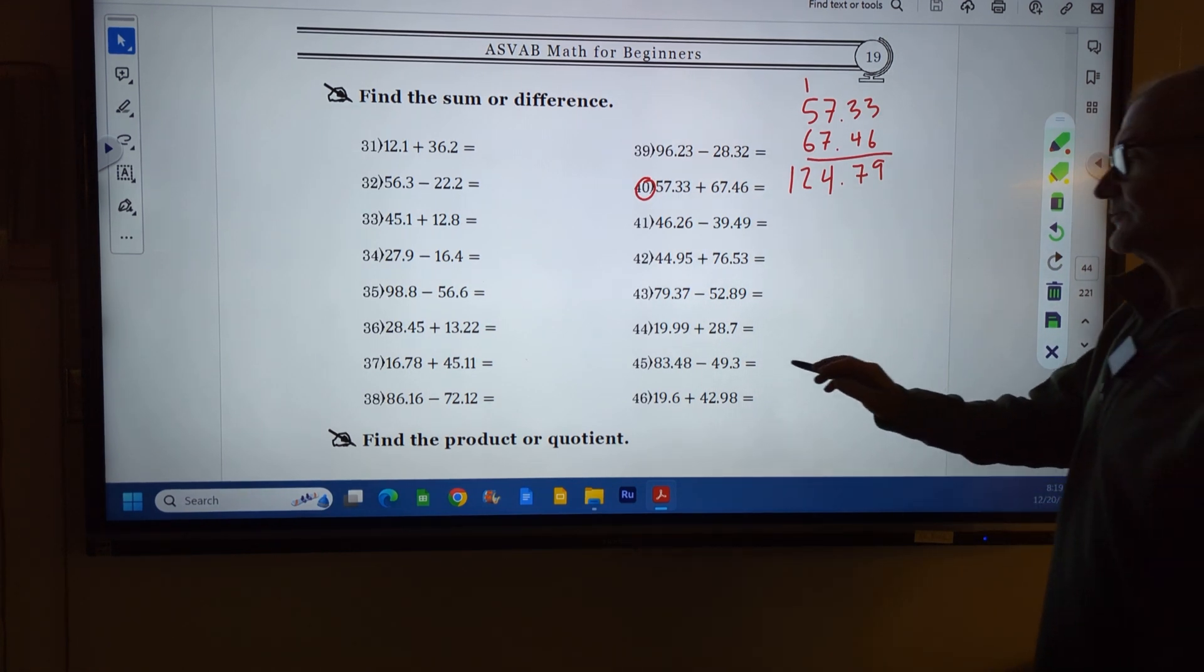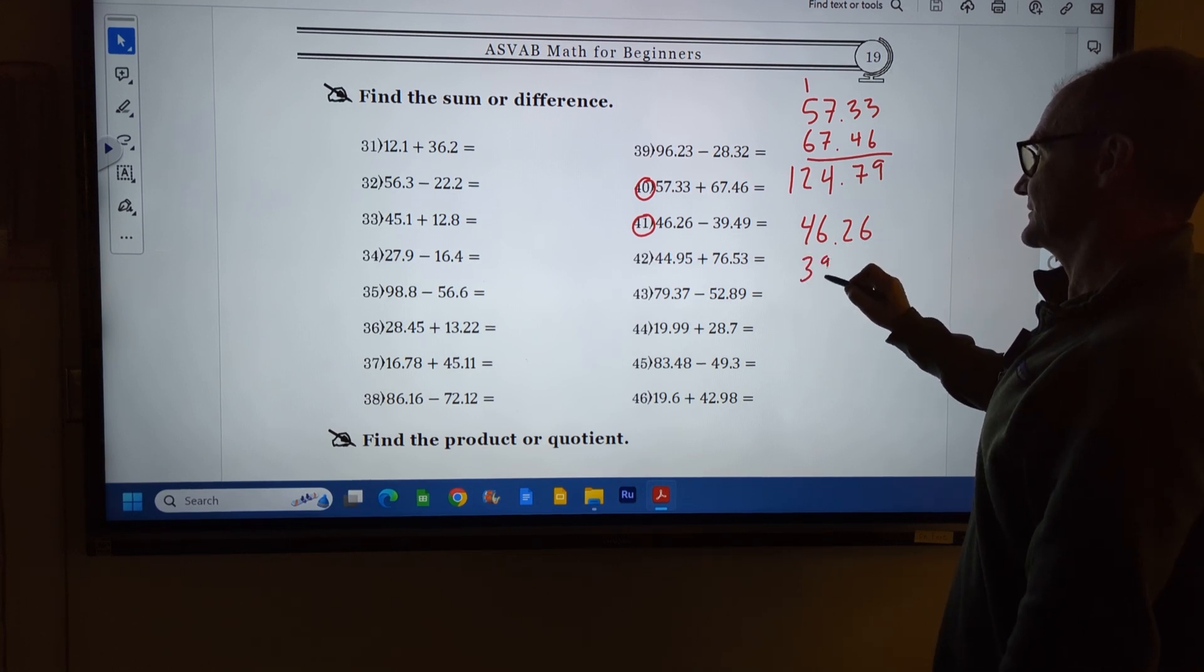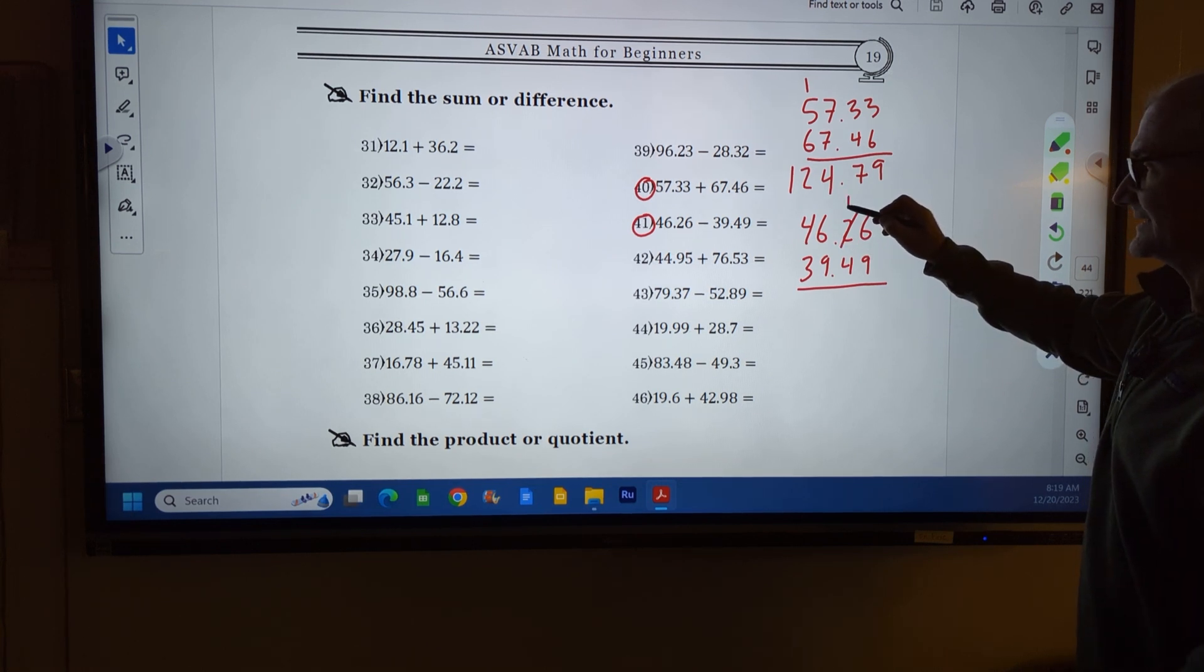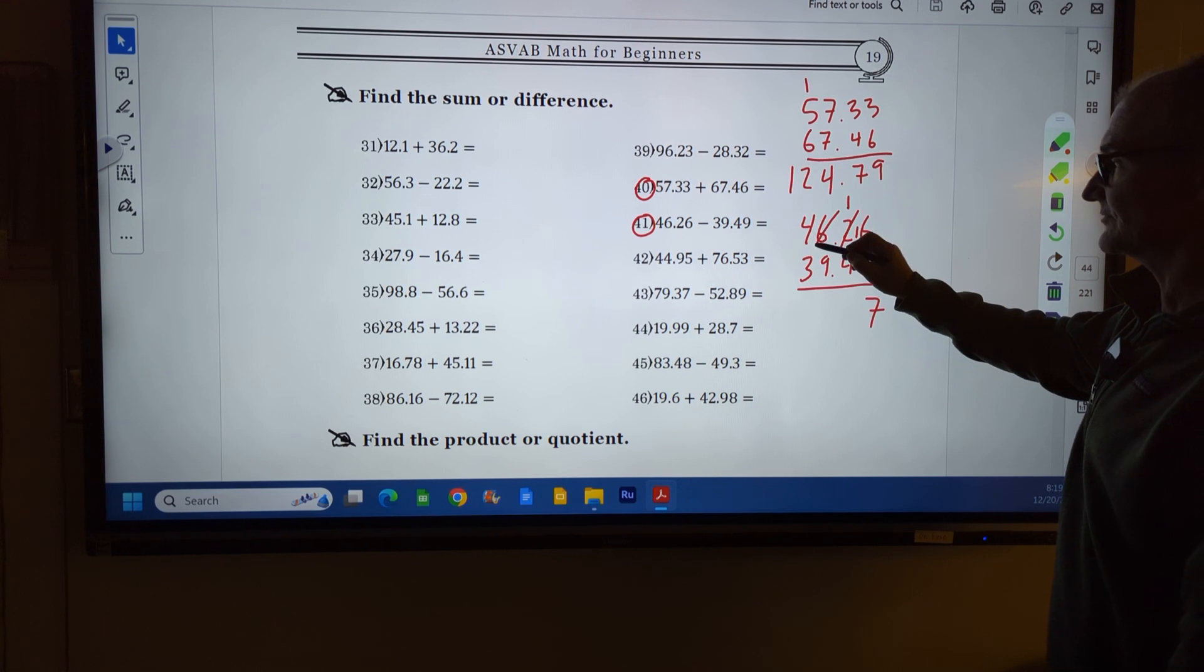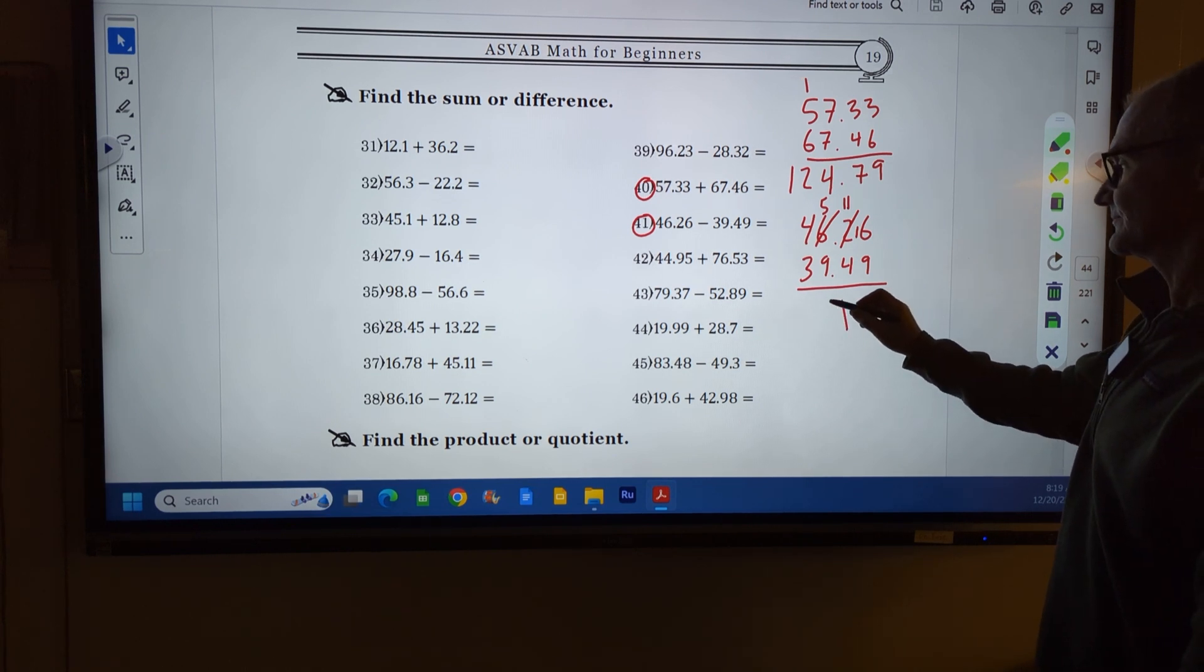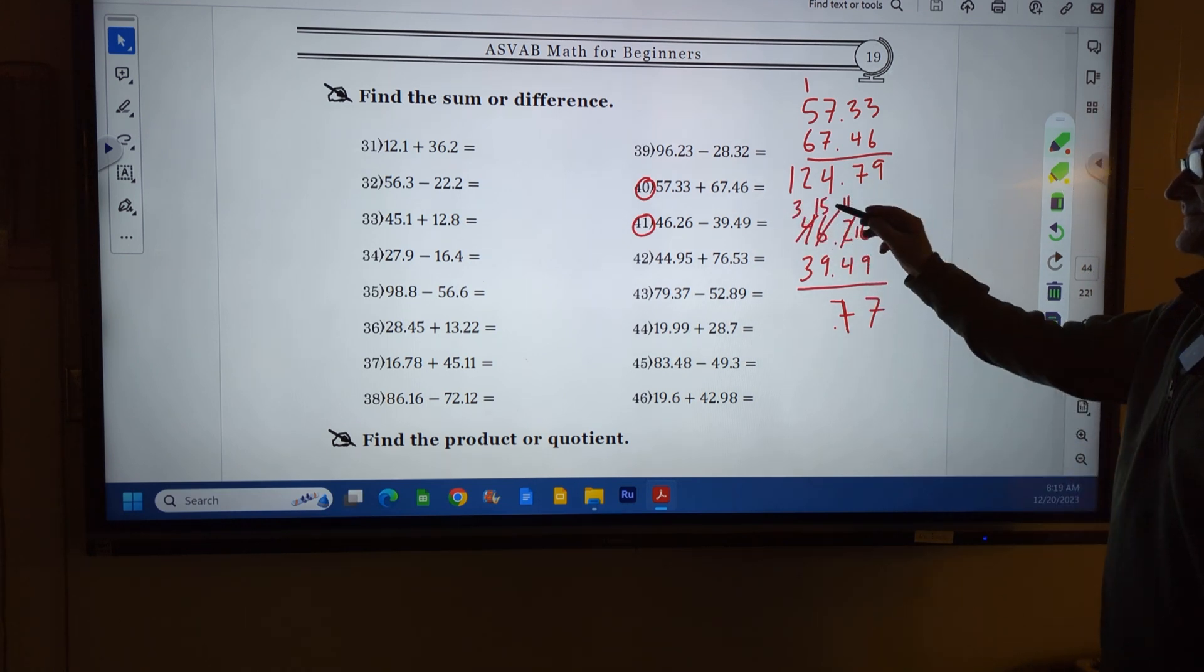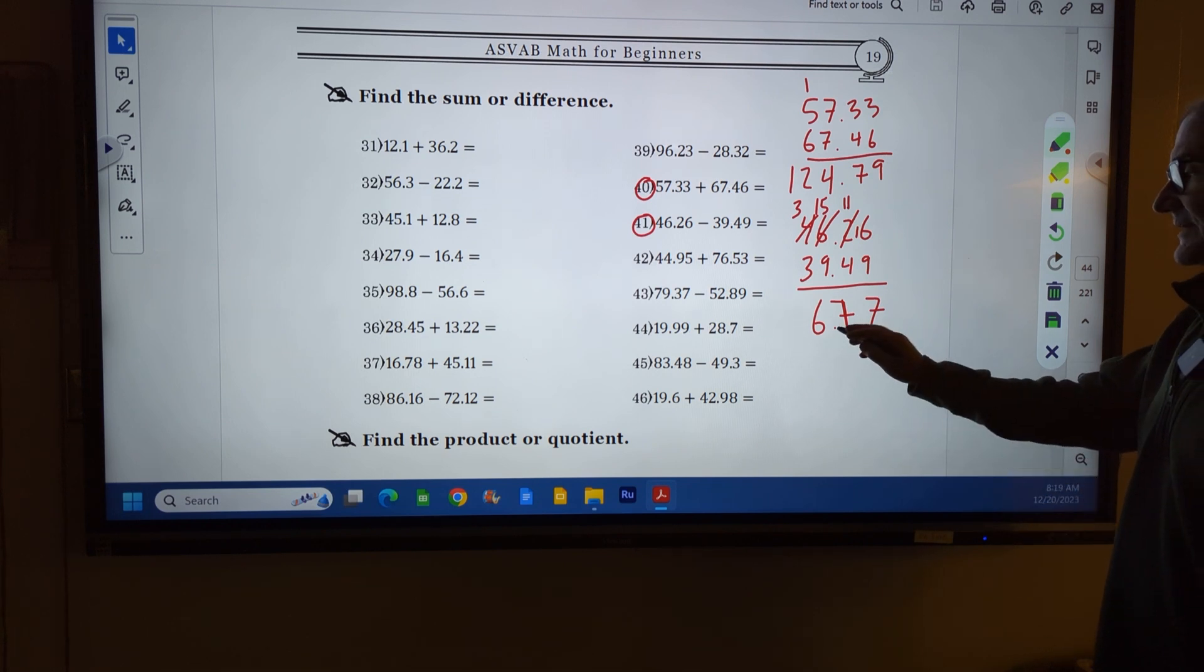Number 41: 46.26 minus 39.49. Now we're going to have to do some borrowing. I can't do 6 minus 9, so I have to borrow from this 2. That 2 becomes a 1, and I take 10 out of it and put it over there. 16 minus 9 is 7. 1 minus 4, I can't do that, so I borrow from here. This becomes a 5, I add 10 to that. 11 minus 4 is 7. 5 minus 9, I can't do that, so I borrow. This becomes a 3, add 10 to that. 15 minus 9 is 6, 3 minus 3 is 0. My answer is 6.77.